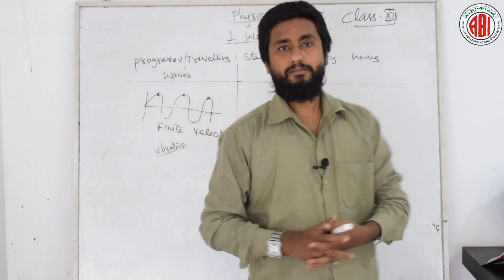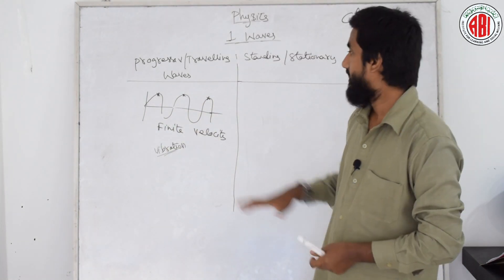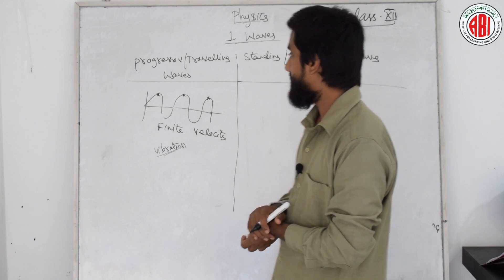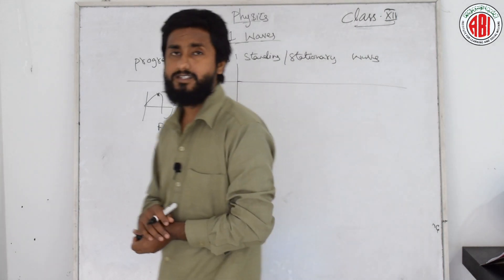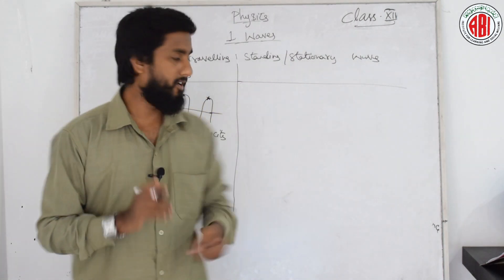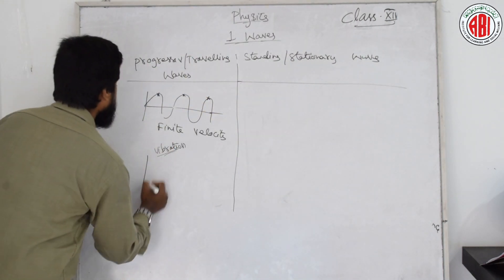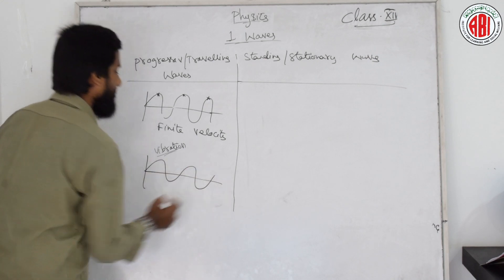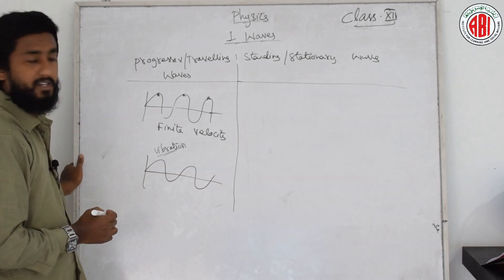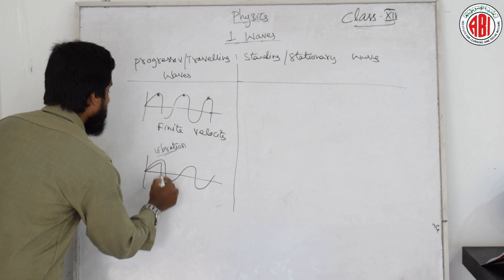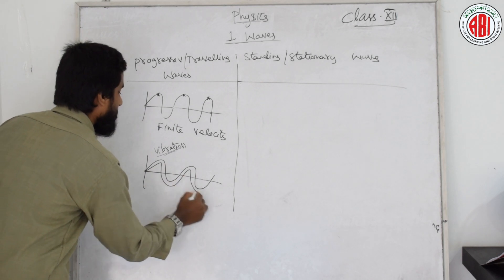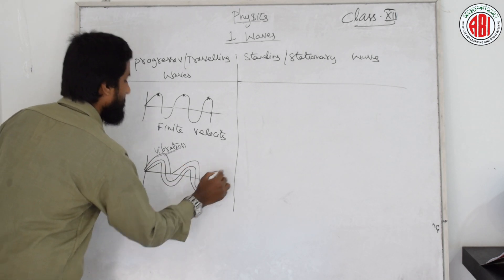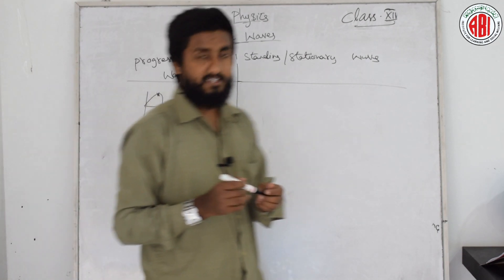The phase of vibration varies continuously from point to point. As you can see, the phase of vibration varies continuously — the first wave might produce like this, the second wave might produce like this, the third wave might produce like this.